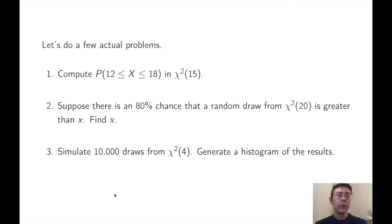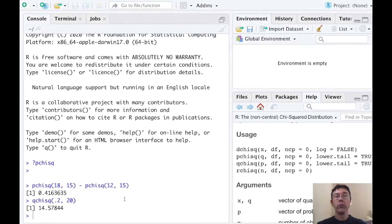Problem three. Simulate 10,000 draws from the distribution chi-squared of four. Generate a histogram of the results. So when we're generating random values in the chi-squared distribution, the command is rchisq.